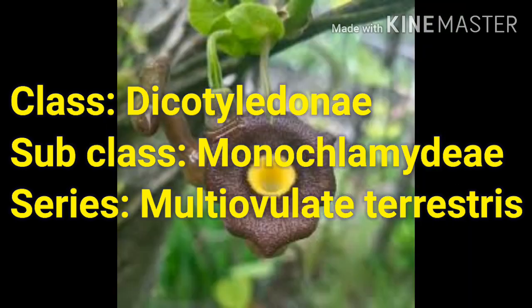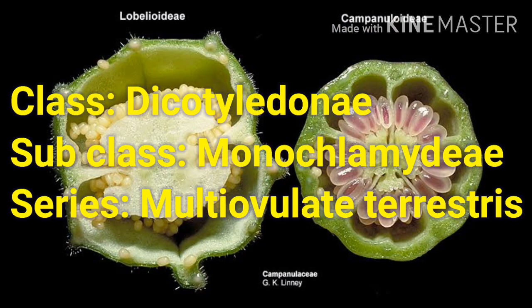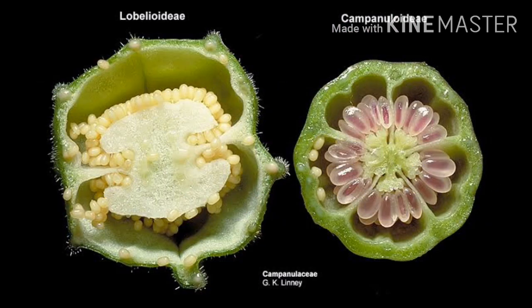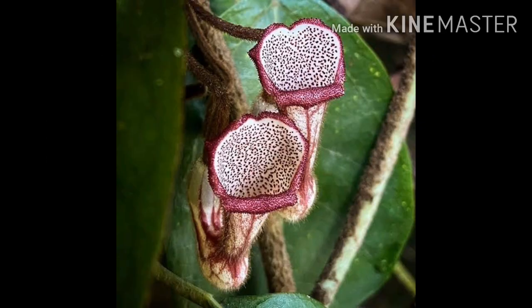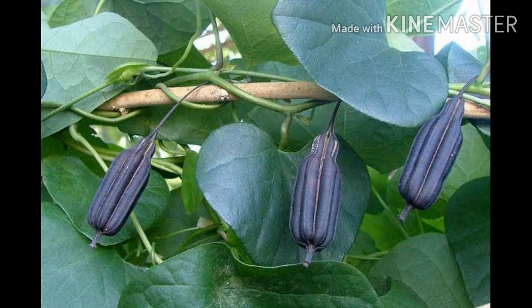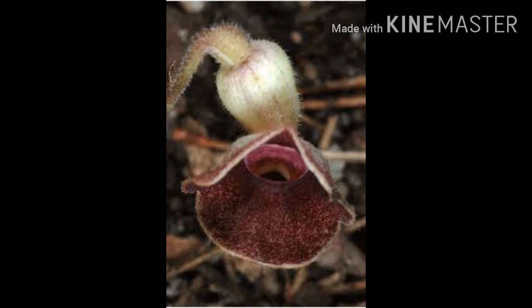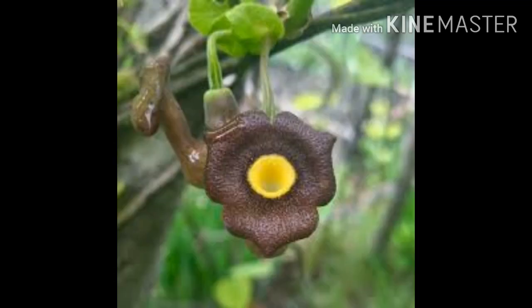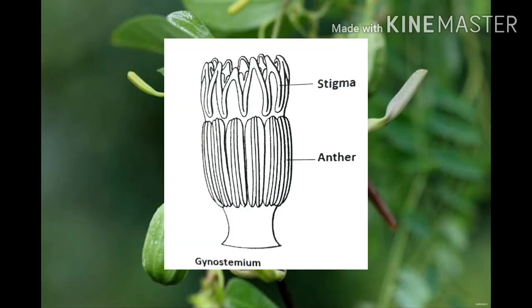Multi-ovulate terrestris are terrestrial plants with syncarpous ovary and numerous ovules. Diagnostic features of the Aristolochiaceae family are: the plants are twiners, flowers zygomorphic or actinomorphic, trimerous, stamens 6–36, free or attached with the styles forming gynostemium.